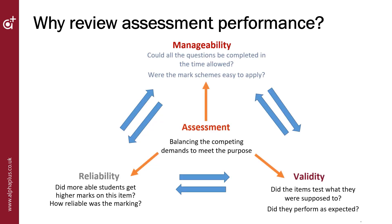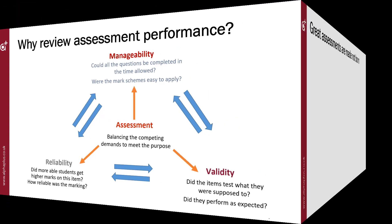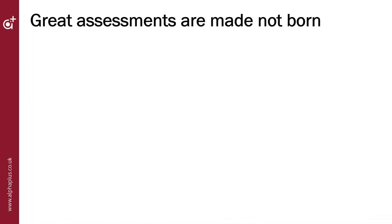As we saw in video 1, an assessment has to balance the three main requirements of validity, reliability and manageability. When reviewing the performance of an assessment, aspects of these three requirements need to be considered. The sorts of questions you might want to ask include: Did the items test what they were intended to test? Did the items perform as expected? Did more able students get higher marks on this item? How reliable was the marking? Could all the questions be completed in the time allowed? Were the mark schemes easy to apply?